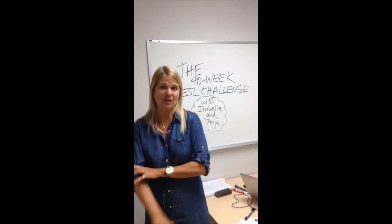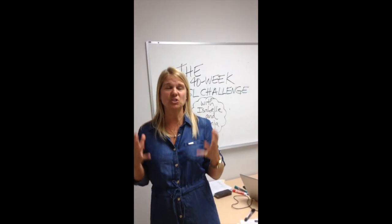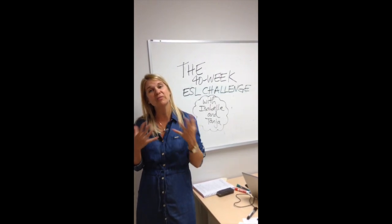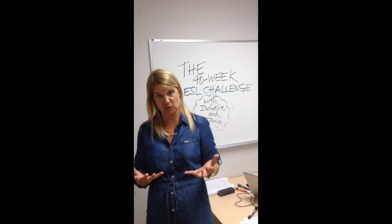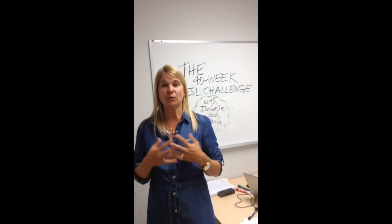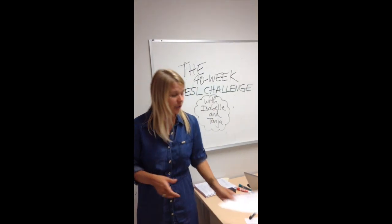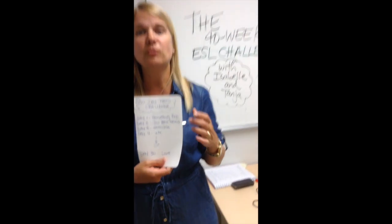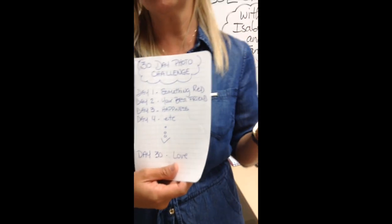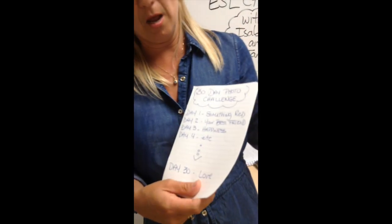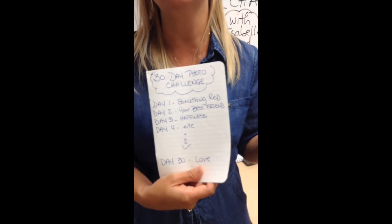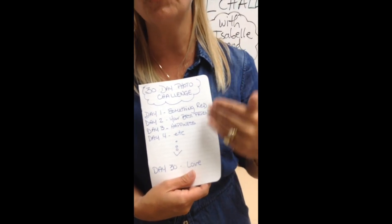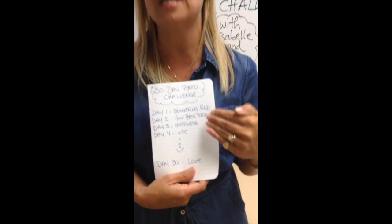So basically here is how it goes. To start, you have to make up a list of 30 things that you want your students to take a picture of. For example, day one could be something red, day two could be my best friend, day three could be happiness, and so on and so forth, so that you have a list of 30 different things to take a picture of.